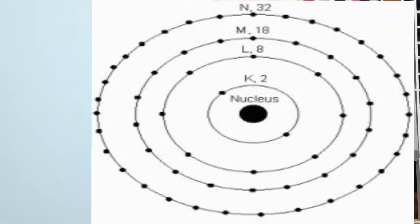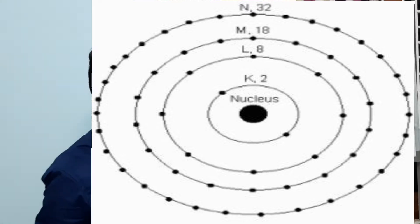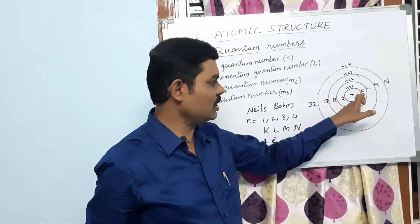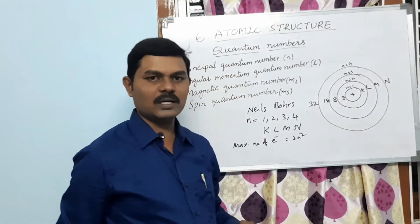Using 2n²: for the first shell (K shell), n=1, so 2×1²=2 electrons. For the second shell (L shell), n=2, so 2×4=8 electrons. For the third shell (M shell), n=3, so 2×9=18 electrons. For the fourth shell (N shell), n=4, so 2×16=32 electrons. So each shell carries a fixed number of electrons: K shell has 2, L shell has 8, M shell has 18, and N shell has 32 electrons.